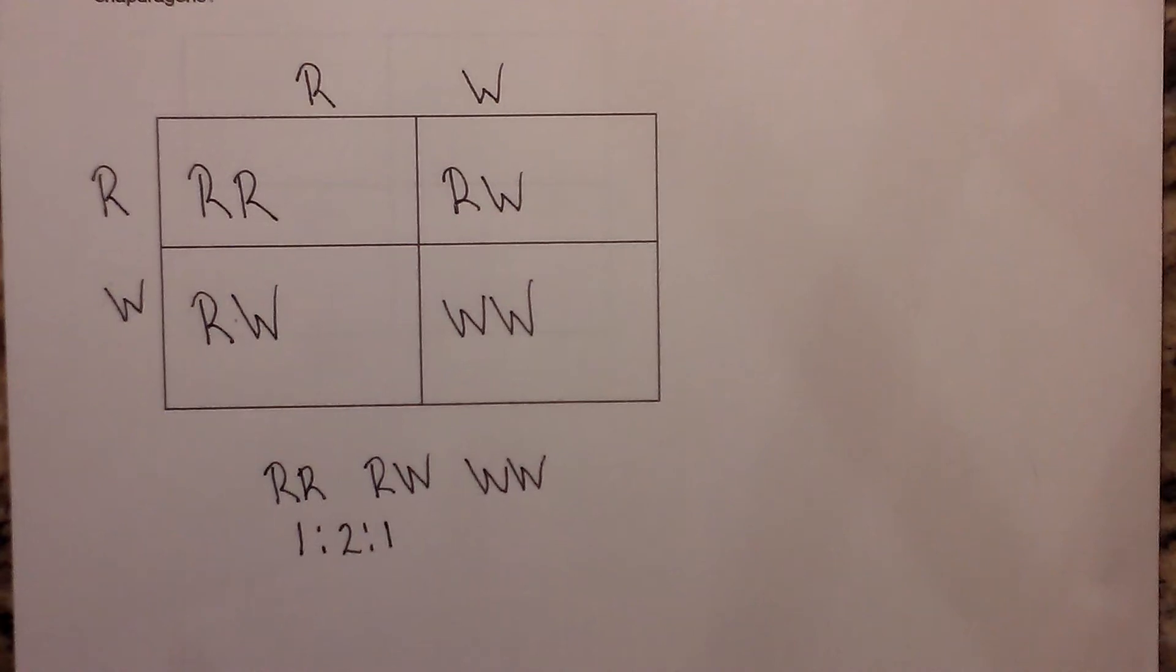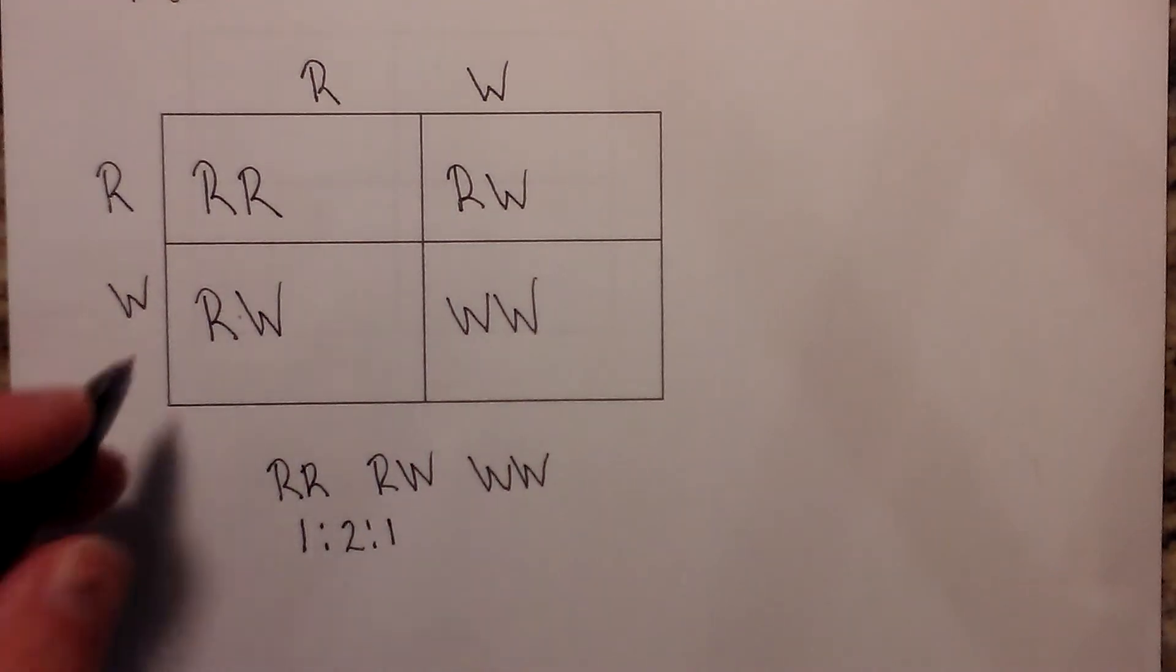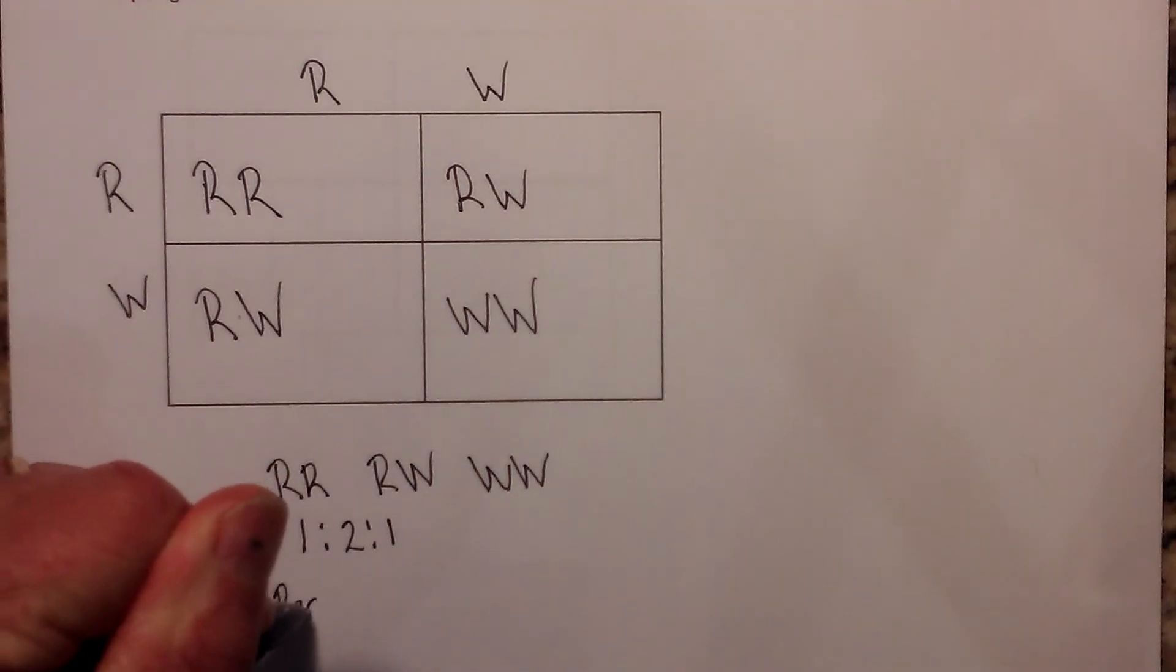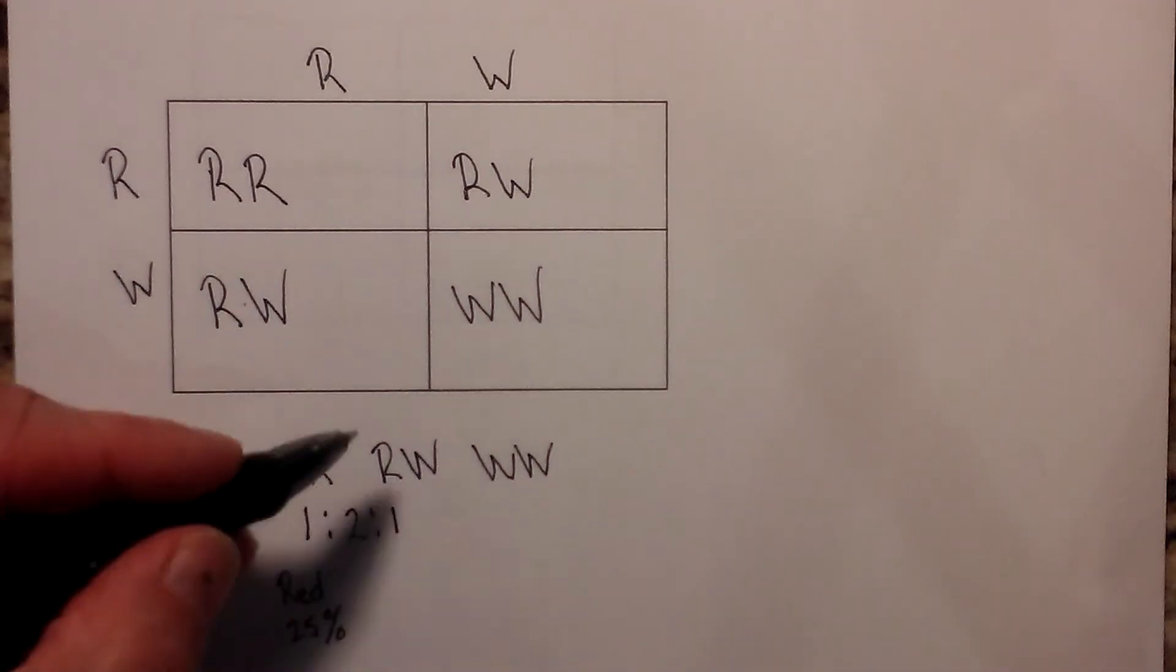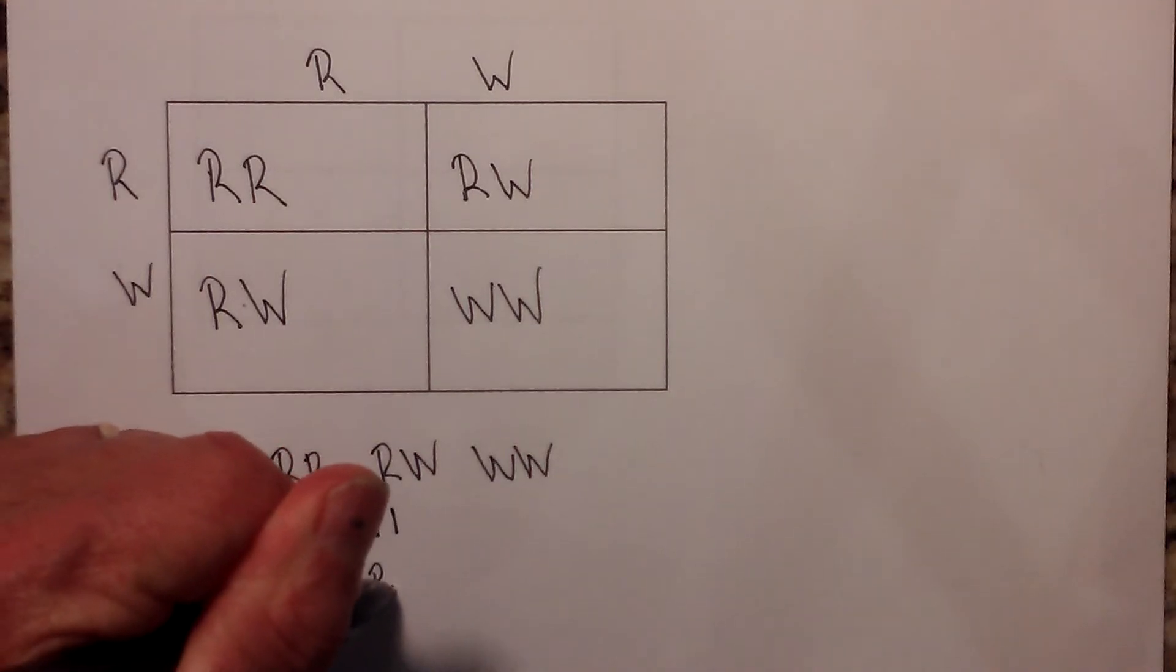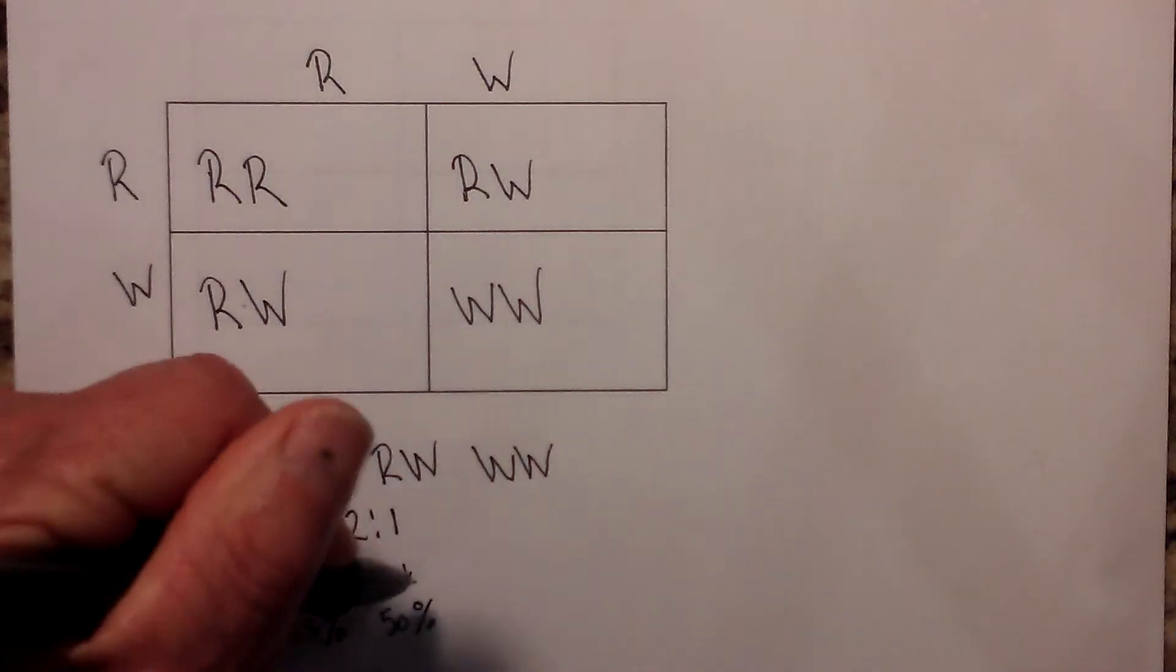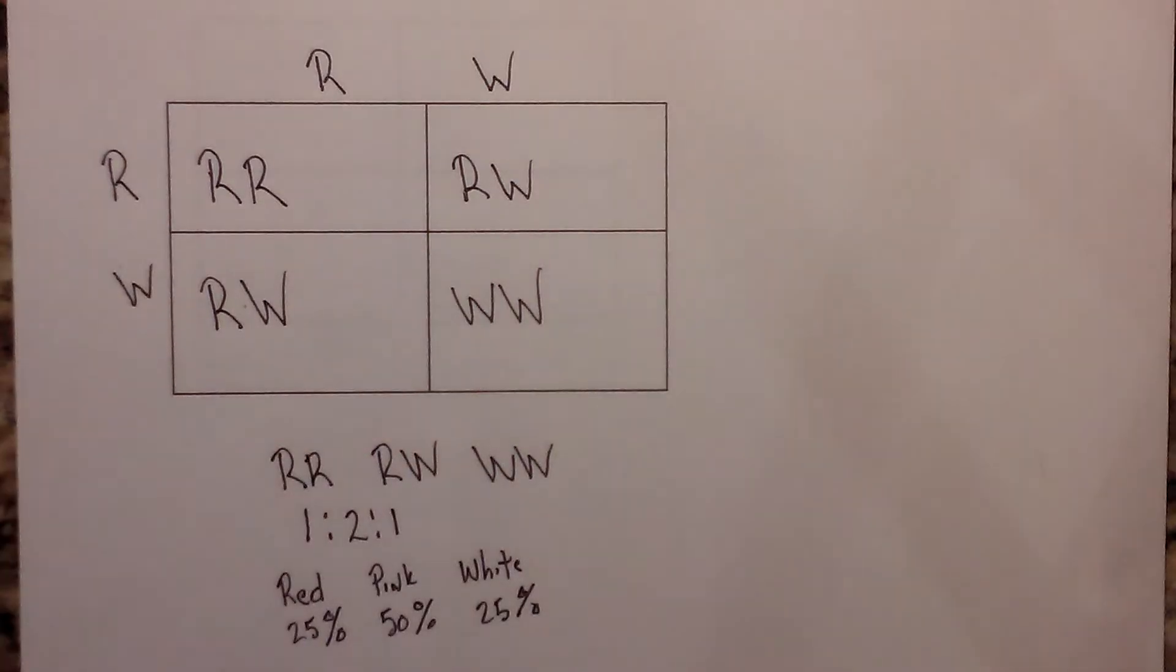Now let's look at what the phenotype is going to be. This box will be red, and that will be 25 percent. The next one in the middle will be pink, and that will be 50 percent because remember each box is 25. And then white will be 25 percent. So there we go. That's the incomplete dominance.